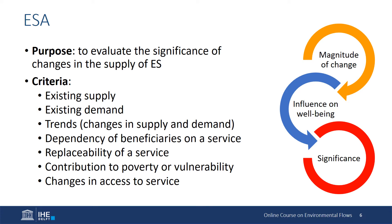The assessment will consider different criteria. For example, how much a group of people depends on a service? What is the capacity and appropriateness of replacing a service or a good with another? How a change on the environment and in the ecosystem could alleviate or increase poverty and vulnerability of specific groups? Or how this change could facilitate or obstruct the access of a group of people to a service or good?